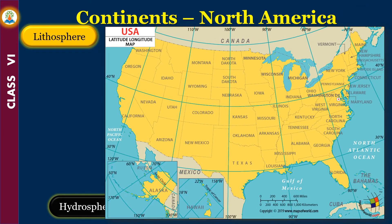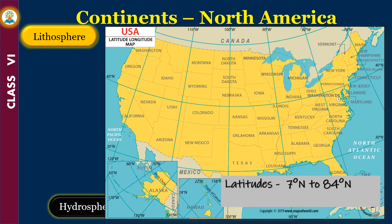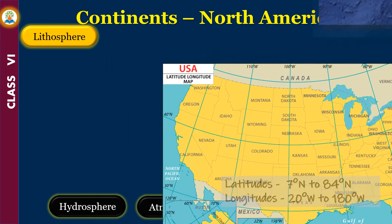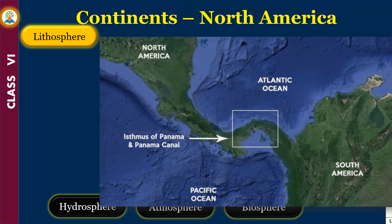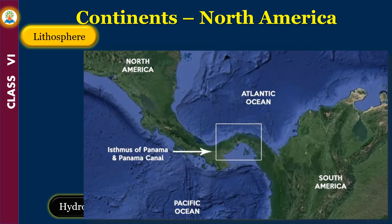North America is the third largest continent, lying between 7 degrees north and 84 degrees north latitudes, and 20 degrees west to 180 degrees west longitudes. In the south, it was earlier joined to South America by the narrow isthmus of Panama. Now, however, the Panama Canal separates the two continents.